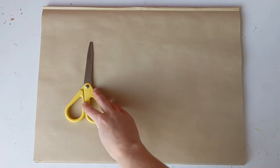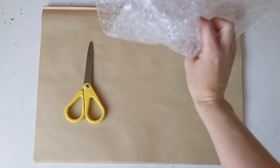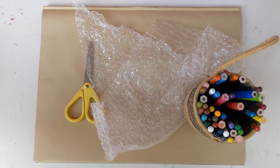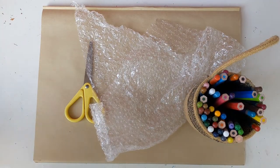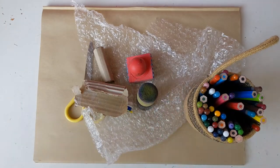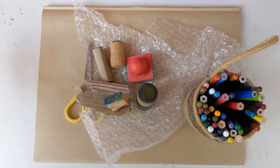I've got this big box here that I'm going to use. You're also going to need some scissors, some bubble wrap, some pencils or pens, and then just lots of things that you might have lying around the house to make interesting marks with.